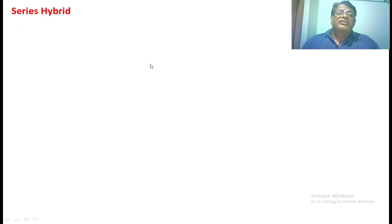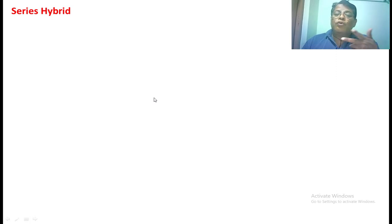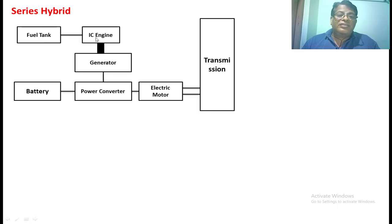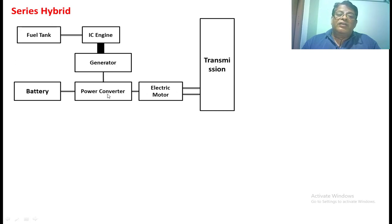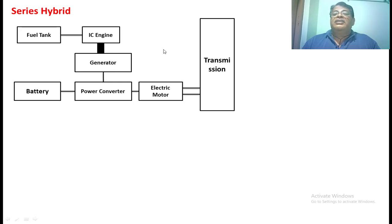Now, what are the different architectures of a hybrid vehicle? The first one is the series hybrid vehicle. In a series hybrid vehicle, we have two sources: one is the IC engine and the other is the battery; both are connected in series to give propulsion power to the vehicle. Here we have the fuel tank, IC engine, and generator. Then a power converter, battery, and motor. This motor gives power to the vehicle. The converter gets power from two sources: the battery and the generator, where the generator gets mechanical input from the IC engine, which is driven by the fuel tank. This configuration is the series hybrid vehicle.